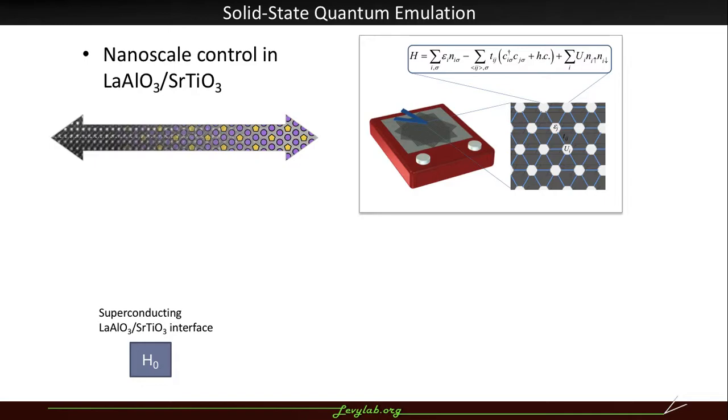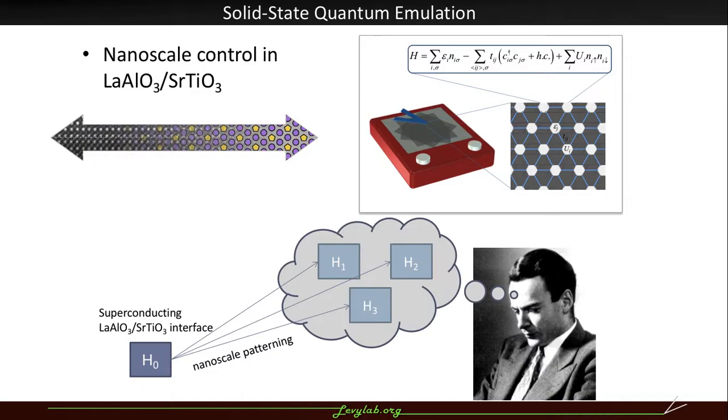We're going to start from this unperturbed interface which is naturally superconducting and then add some nanoscale patterning to perhaps transition into different quantum phases. And this is the idea that Feynman had in the 80s of quantum simulation.